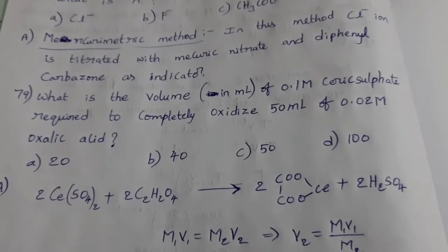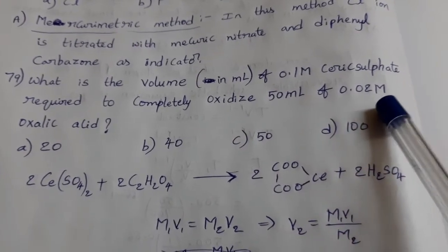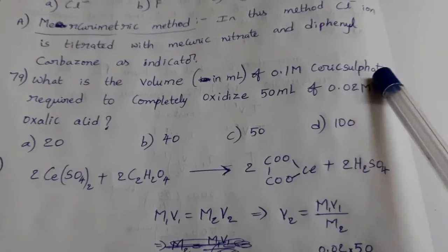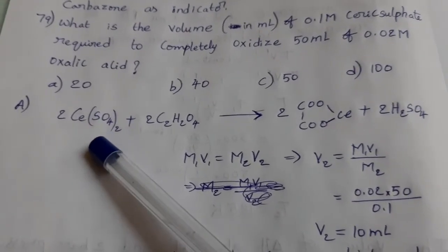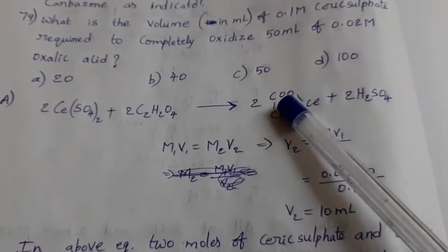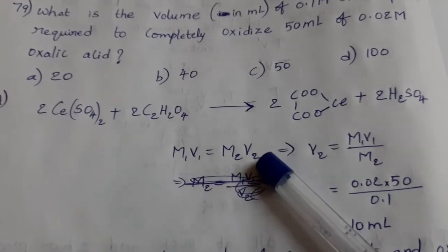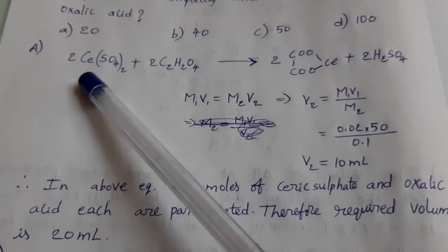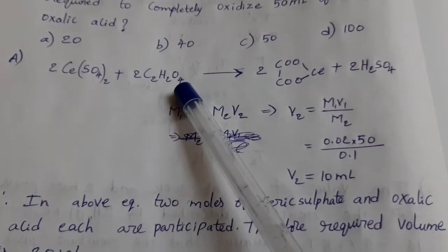What is the volume in milliliter of 0.1 molar ceric sulfate required to completely oxidize 50 ml of 0.02 molar oxalic acid? We want to oxidize oxalic acid by using ceric sulfate. How much volume of ceric sulfate is required we should calculate. Between these two, balanced equation is 2·Ce(SO4)2 plus 2·C2H2O4, this is oxalic acid, gives rise to 2·CeO2 + 2H2SO4. Suitable equation is M1V1 = M2V2. Substitute values, V2 equal to 10 ml. In above equation 2 moles of ceric sulfate, 2 moles of oxalic acid are participated. Therefore,